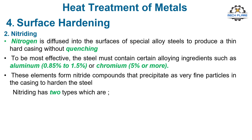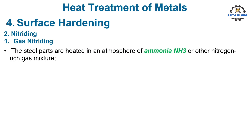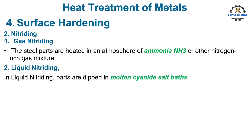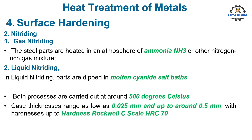Nitriding has two types: 1. Gas nitriding and 2. Liquid nitriding. In gas nitriding, the steel parts are heated in an atmosphere of ammonia (NH3) or other nitrogen-rich gas mixture. In liquid nitriding, parts are dipped in molten cyanide salt baths. Both processes are carried out at around 500°C. Case thicknesses range as low as 0.025 mm and up to around 0.5 mm, with hardnesses up to HRC 70.